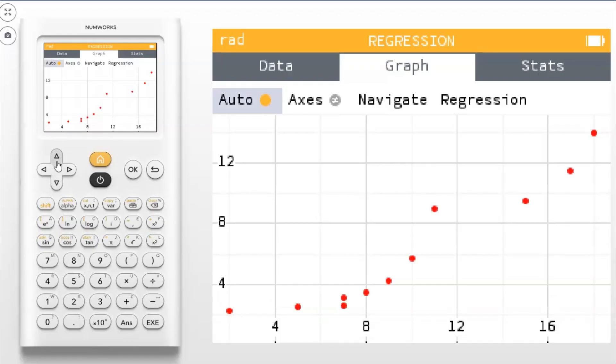When you click on auto, it'll automatically zoom on it. You don't have to worry about going to a window and trying to find your data. Then you can navigate through each of those data points if you want.